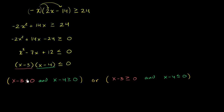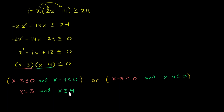So what does the first case simplify to? x minus 3 less than or equal to 0 gives x less than or equal to 3, and x minus 4 greater than or equal to 0 gives x greater than or equal to 4. What values of x are less than or equal to 3 and greater than or equal to 4? There are none — anything less than or equal to 3 is not greater than or equal to 4, so there's no x that satisfies this first case.